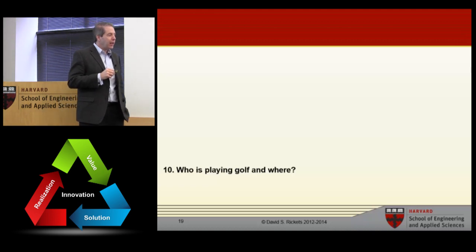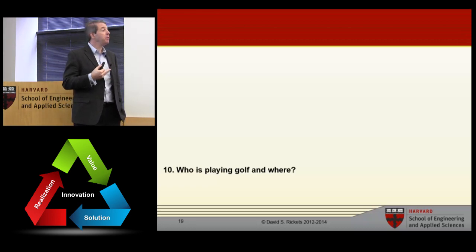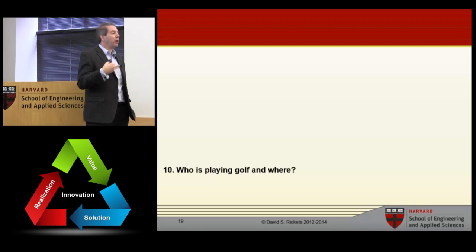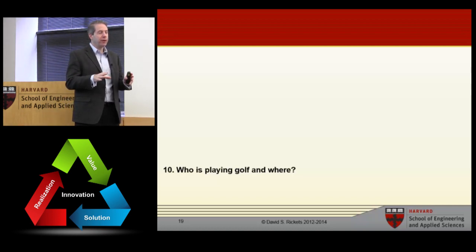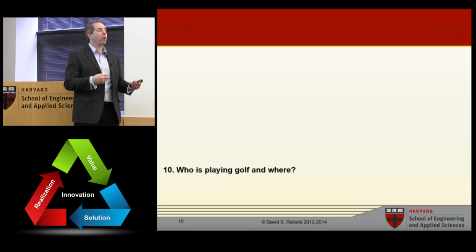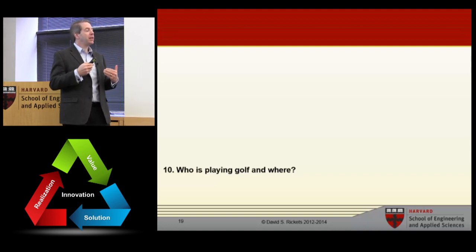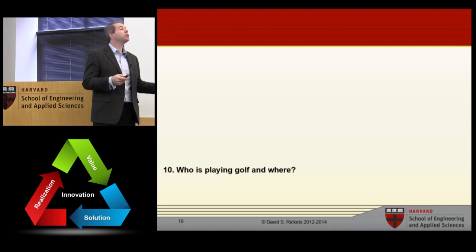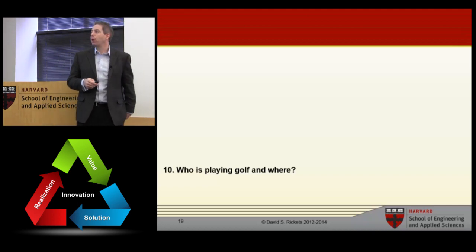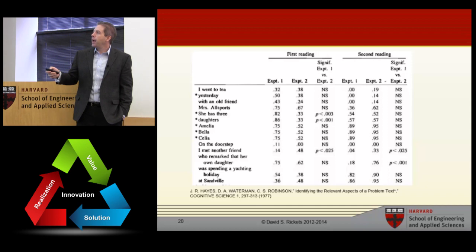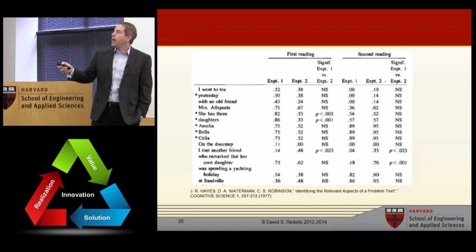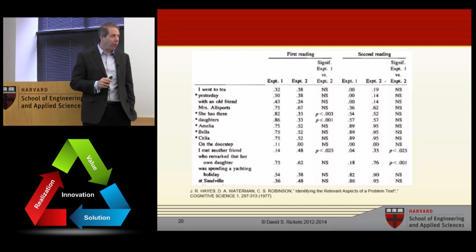Who is playing golf and where? As you went through this, you didn't know how to judge what's important, but you probably pulled out words from each sentence that you thought likely were important. I think of this as a murder mystery — throughout the entire movie, facts are being given to you but you don't know what's important or not. This was actually done as part of a research paper. They did exactly what we just did, and here are the words and the percentage of people in the first reading of Experiment 1 who thought the words were important.